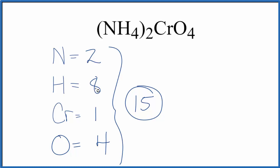We have 2 nitrogen atoms, 8 hydrogen atoms, 1 chromium, and 4 oxygen. Remember, the 2 applies to everything in the parentheses. Thanks for watching.